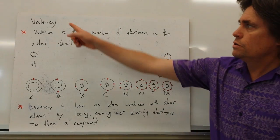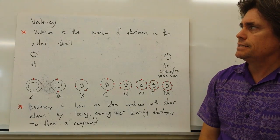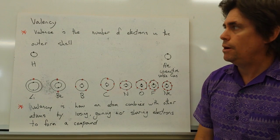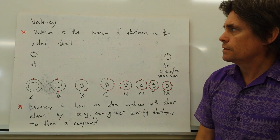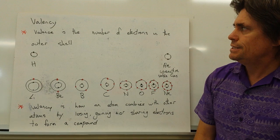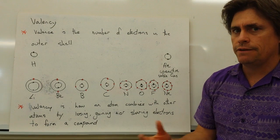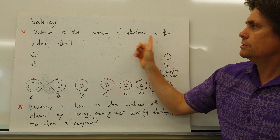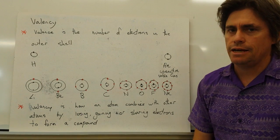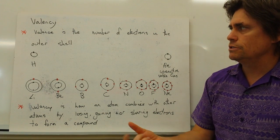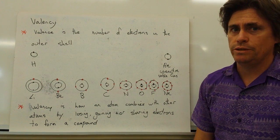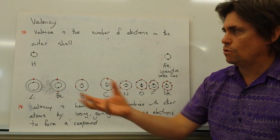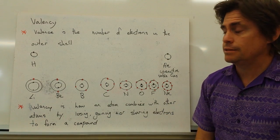Let's have a look at the concept of valency and how we use valency to predict how atoms combine. First of all, we define valence as the number of electrons in the outer shell of an atom. Electrons can move between the shells of atoms; they can also move out of atoms or come into atoms.